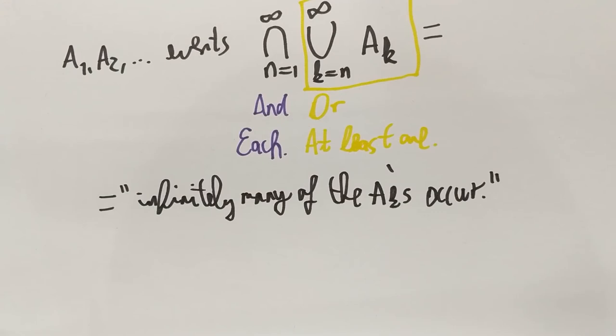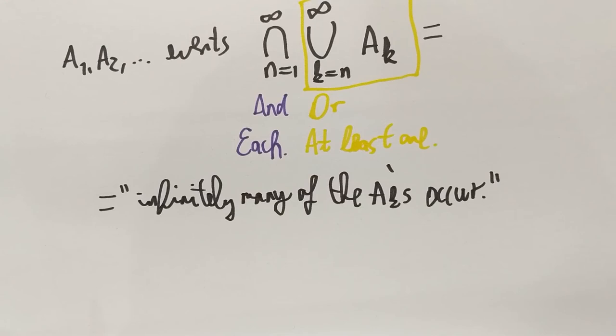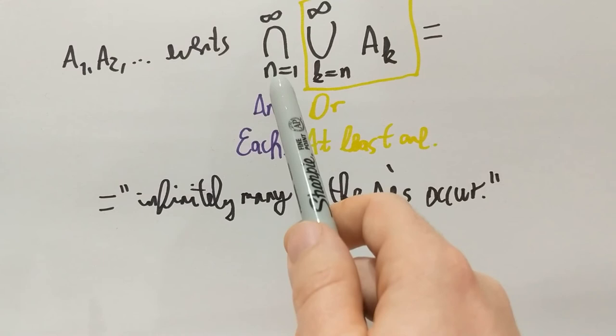It is not equivalent to say that all of them occurs, or all of them after the index occurs. That's not true. It's just infinitely many of them. Maybe they are very rare. Maybe you have one A occurring, maybe it's A1 million, and the next one is A2 million. But no matter how far you go, there is always going to be a next one which occurs, and that's what this intersection in n, union in k from n to infinity, that's what it means.